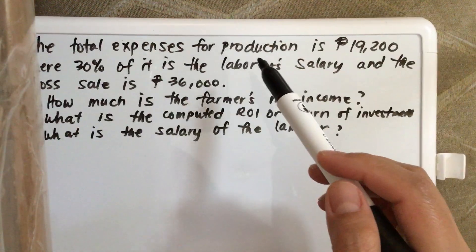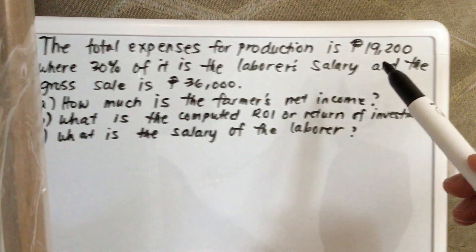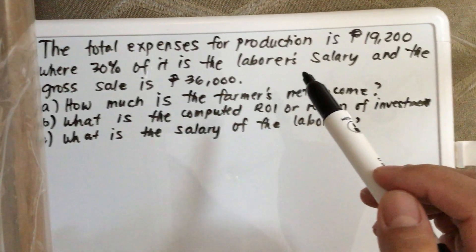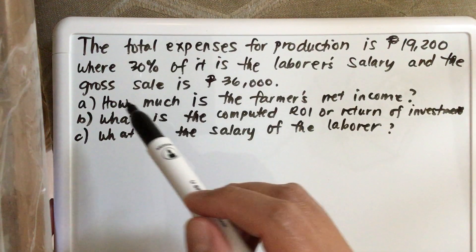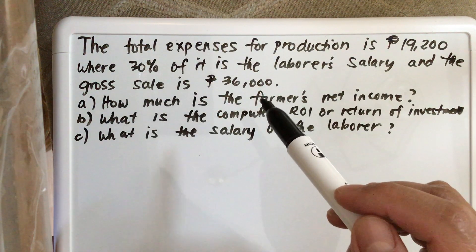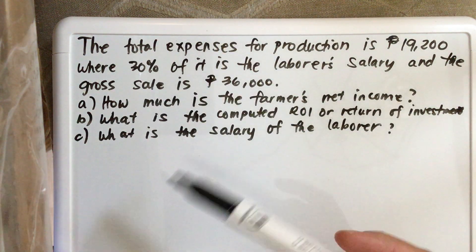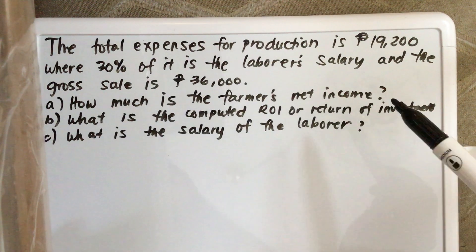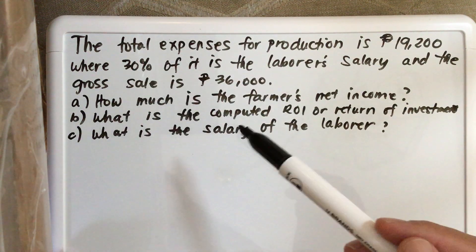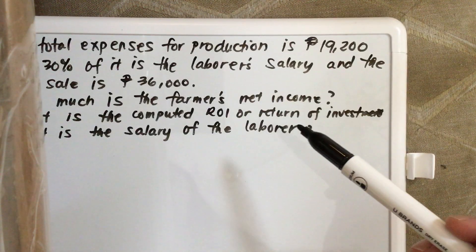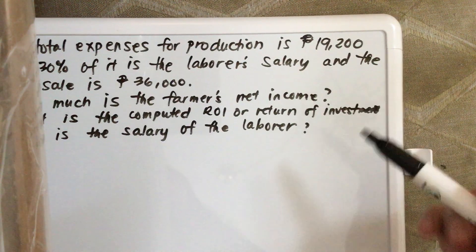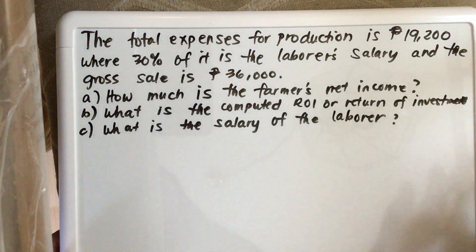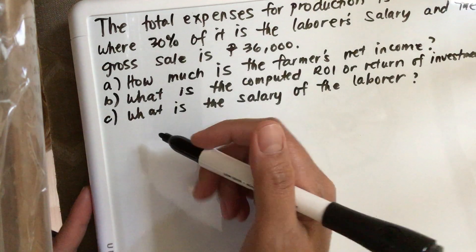The total expenses for production is 19,200 pesos, where 30% of it is the laborer's salary, and the gross sale is 36,000 pesos. Question A: how much is the farmer's net income? Question B: what is the computed ROI or return on investment? And C: what is the salary of the laborer?